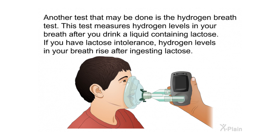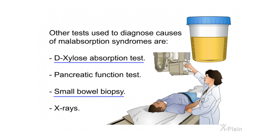Another test that may be done is the hydrogen breath test. This test measures hydrogen levels in your breath after you drink a liquid containing lactose. If you have lactose intolerance, hydrogen levels in your breath rise after ingesting lactose. Other tests used to diagnose causes of malabsorption syndromes include the D-xylose absorption test, pancreatic function test, small bowel biopsy, and X-rays.